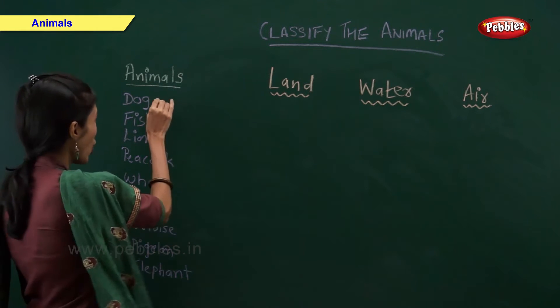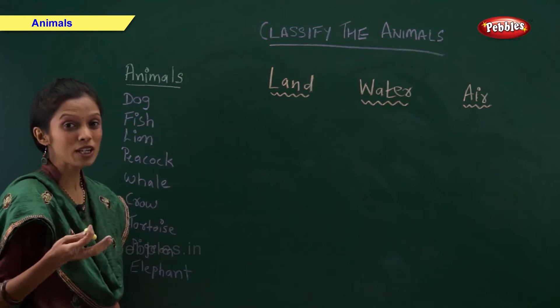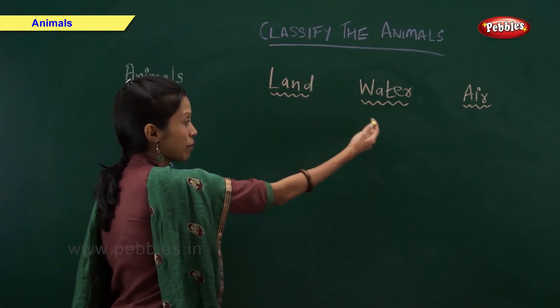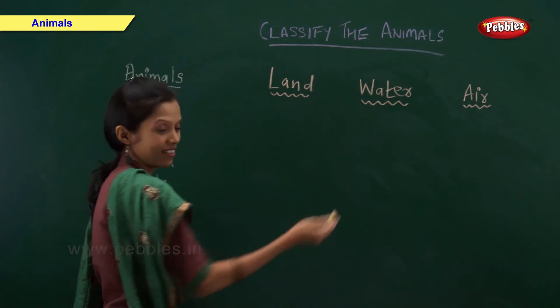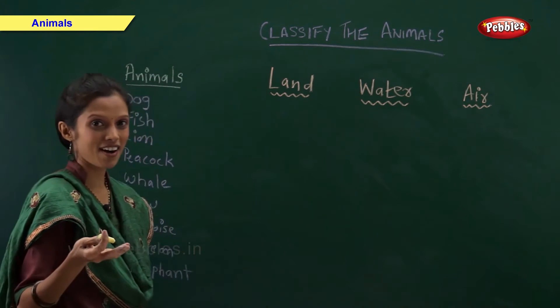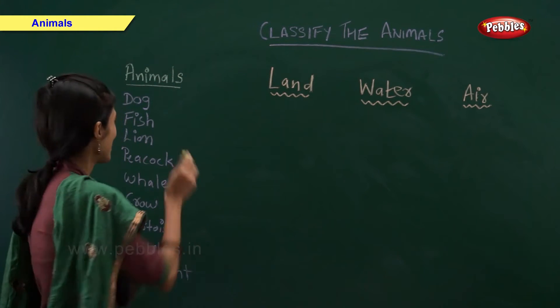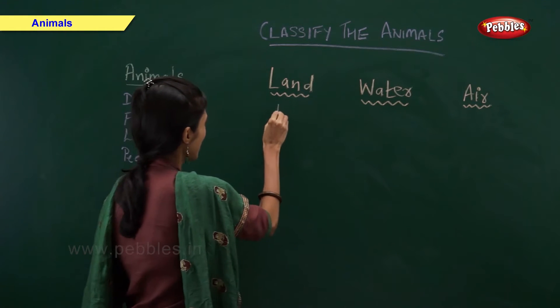Dog. Now tell me, is a dog a land animal, water animal or air animal? Come on fast. Yes, dog is a land animal.